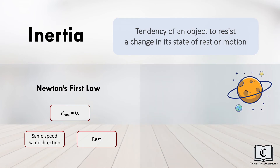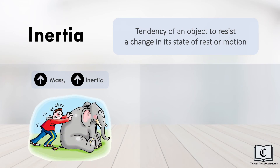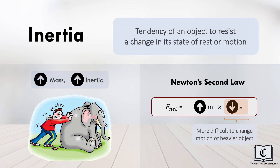We can see this with a moving bullet in space — it will continue moving forever since the net force acting on it is zero. Another property is that the greater the mass of an object, the greater its inertia. A heavier object will be more difficult to move or stop once it is moving. This ties in with Newton's second law: with the same net force, a higher mass results in a smaller acceleration, making it much more difficult to change the motion of a heavier object.